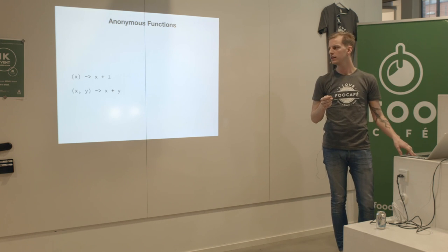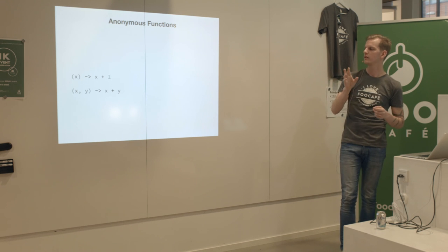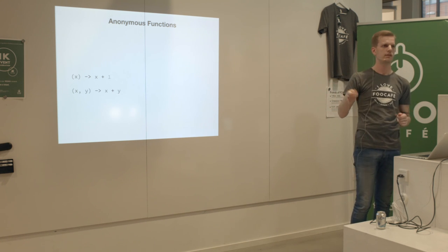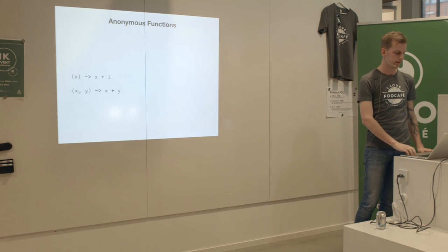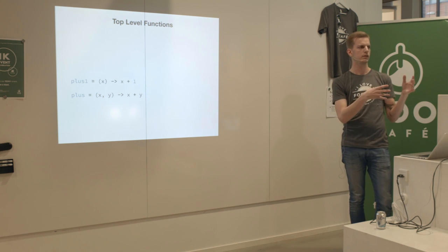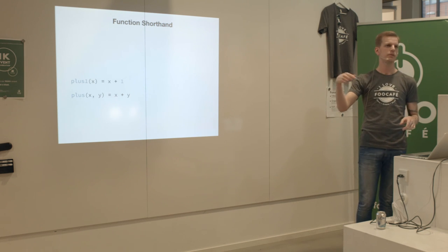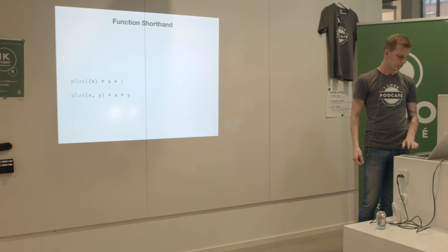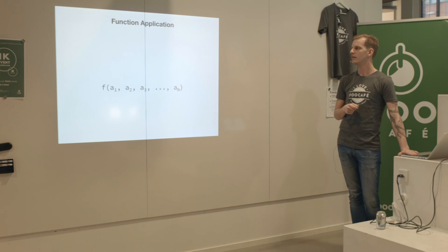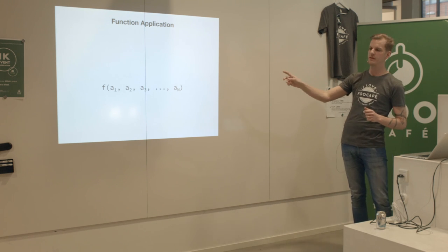You write functions using parentheses with commas between the parameters, an arrow, and then the body. These are two anonymous functions - the first takes x, the second takes x and y. We can assign those and give them names. At the top level of an Oden source file you can use a shorthand. When applying a function it's the same standard syntax - there's something going on under the hood we'll talk about later.